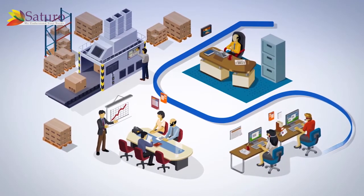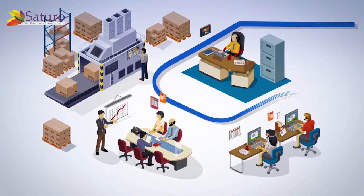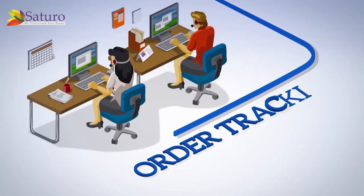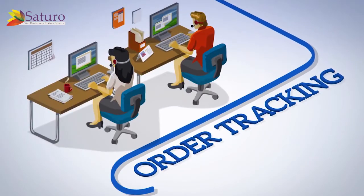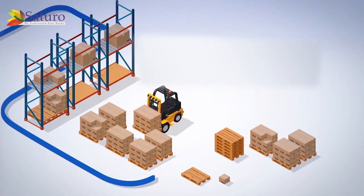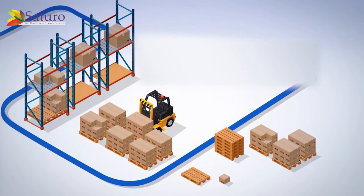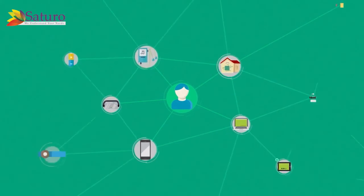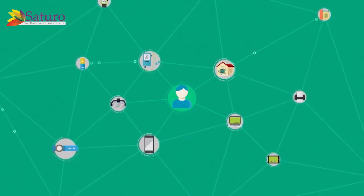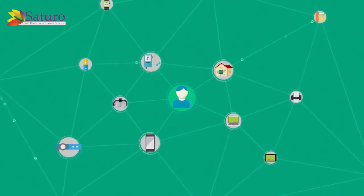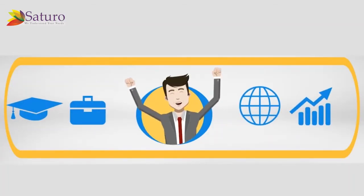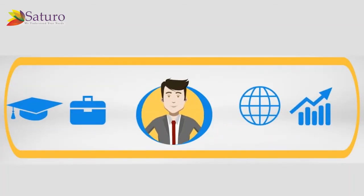ERP brings automation to the manufacturing aspects of a company, like production, BOM, order, and dispatch. Some processes are quite complex while tracking the raw material for the production of goods, which require orders to be channelized. The software prevents repetitive data entry, resulting in better and improved functions.